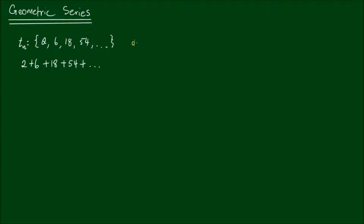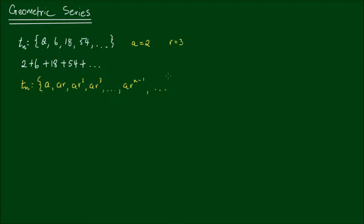In this particular example, we have the starting value, or the scale factor, a equals 2, and the common ratio r equals 3. So for a more general geometric series, where we express all the terms in terms of a and r, we know the first term is a, then the second term is ar, third term is ar squared, ar cubed, and so on until ar to the n minus 1. The geometric series is then a plus ar plus ar squared plus ar cubed plus ar to the fourth, plus so on and so forth.